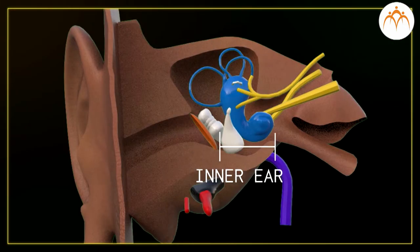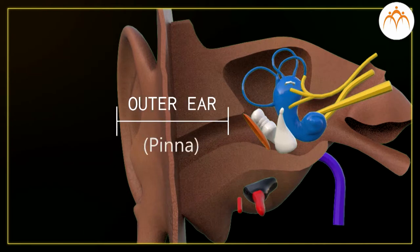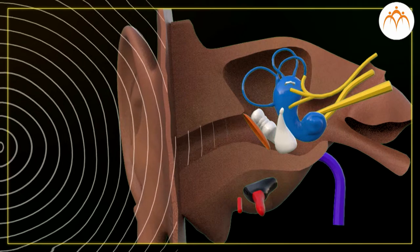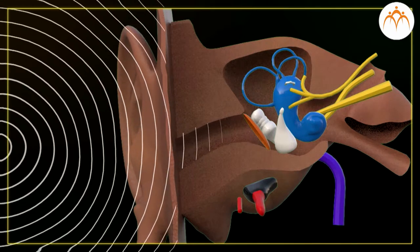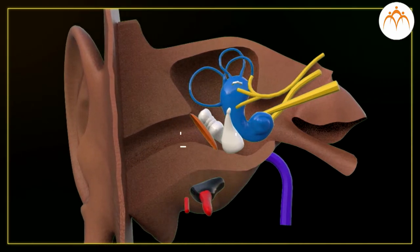The outer ear collects the sound waves and passes them through a tube to a cavity that is in the middle ear. Its peculiar funnel-like shape helps to collect and pass the sound into the middle ear.